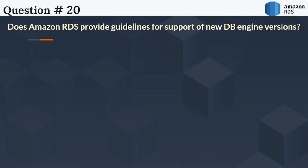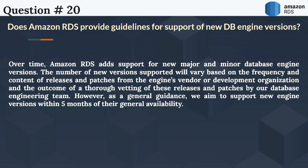The next question is: Does Amazon RDS provide guidelines for support of new DB engine versions? Over time, Amazon RDS adds support for new major and minor database engine versions. The number of new versions supported varies based on the frequency and content of releases and patches from the engine's vendor, and the outcome of vetting by the database engineering team. As a general guidance, they aim to support new engine versions within 5 months of their general availability.